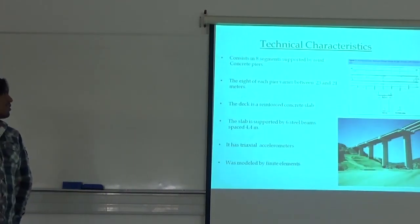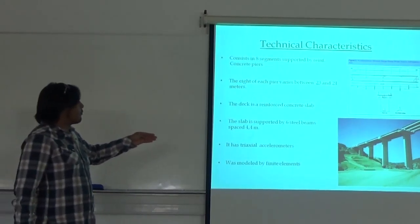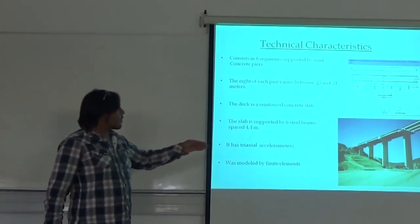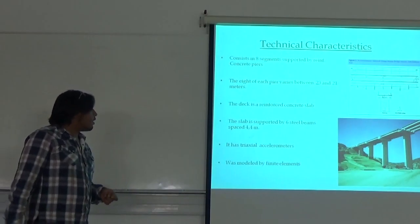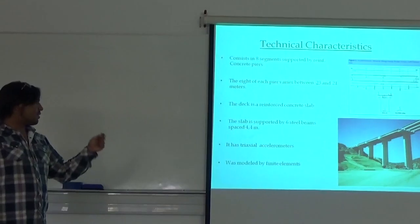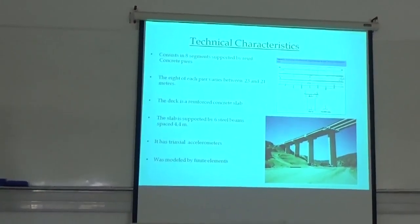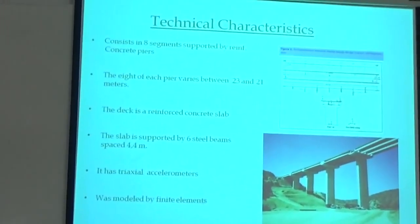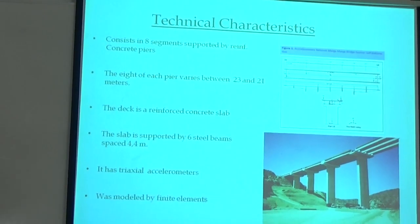The technical characteristics: it had eight piers between 23 and 21 meters. The beams, the deck, these are reinforced concrete slabs with six steel beams in the bottom of the slab. And it has tri-axial accelerometers. Tri-axial, it takes the three movements of the earthquakes.